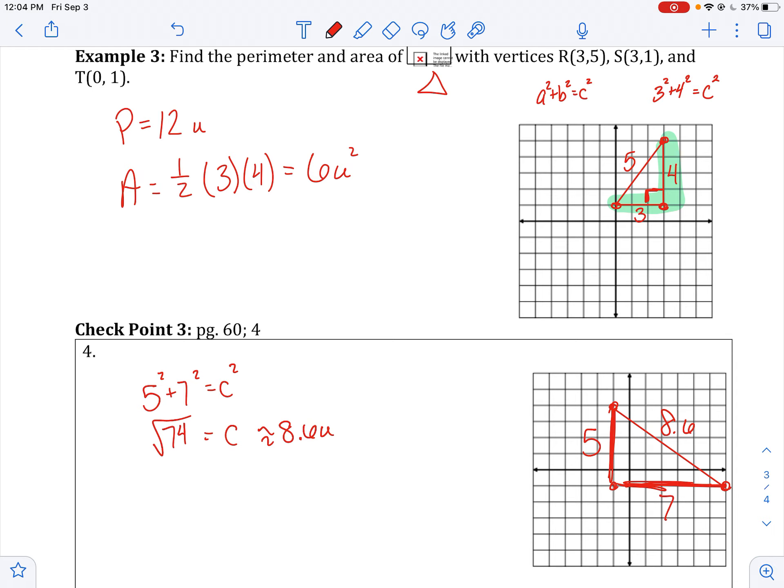And if that's 8.6 units, then to find my perimeter, add up all those three parts.